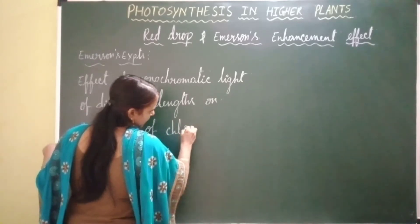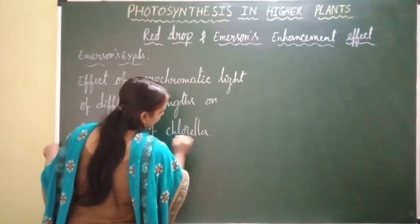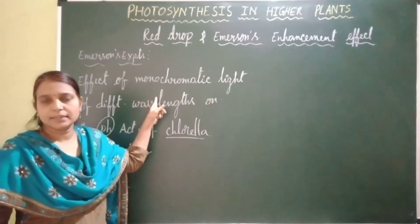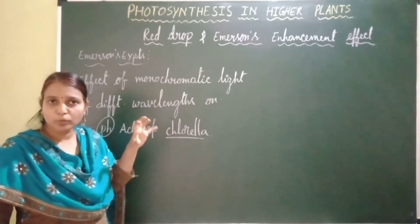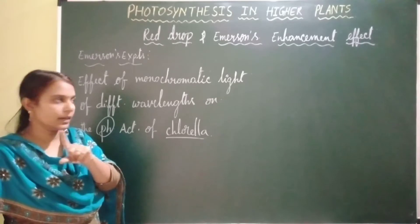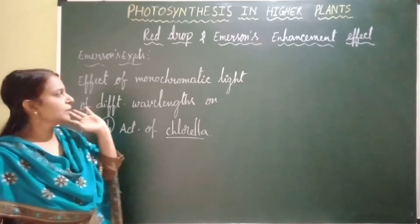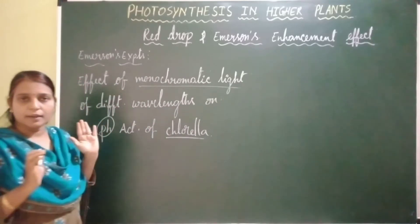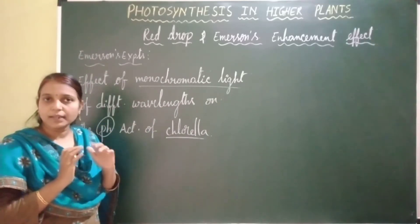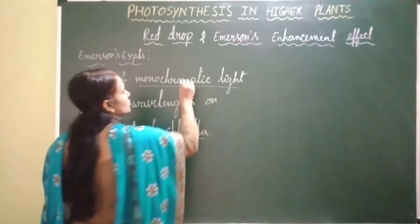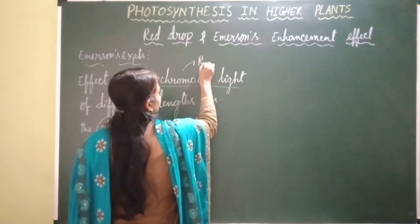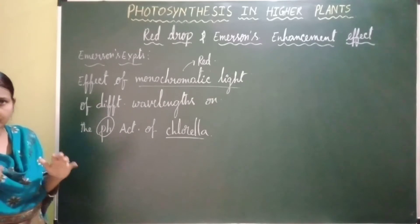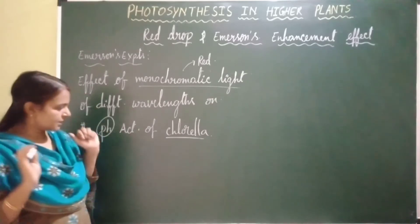Chlorella is a unicellular green alga. What is monochromatic light? Mono means single, chromatic means colored light. So monochromatic light is light with only one color — here he used red colored light, light of the red region.